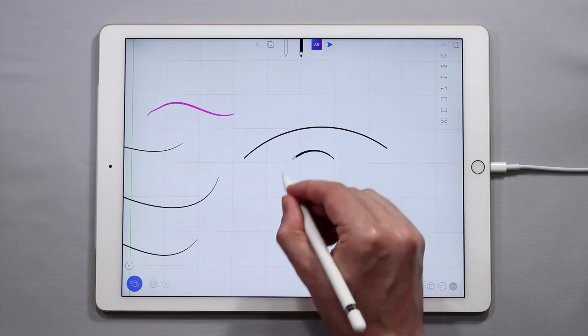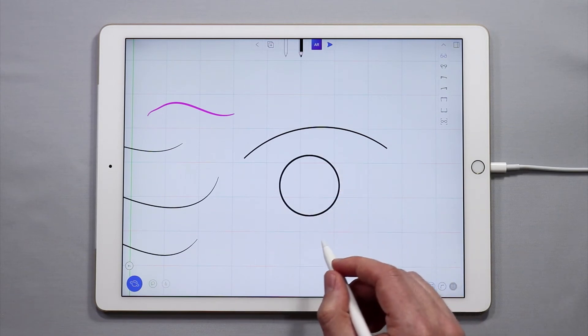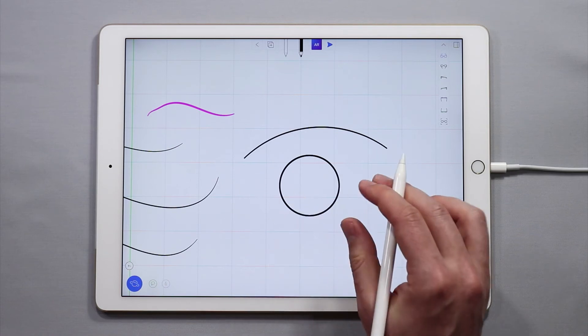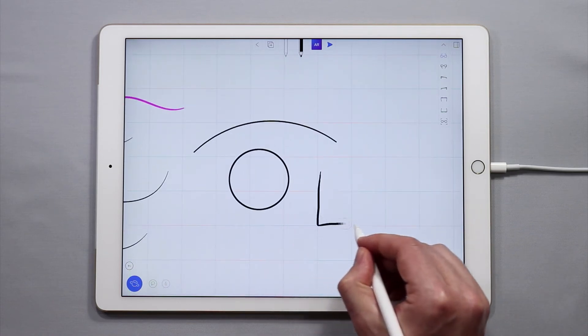If I draw a circle, it's going to assume that I'm drawing a circle and it's going to correct my circle to make it a perfect geometric circle. And the same thing goes for a square.